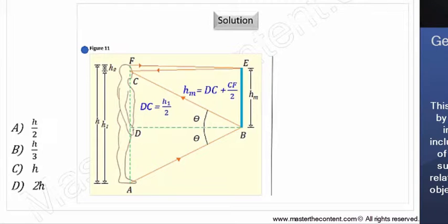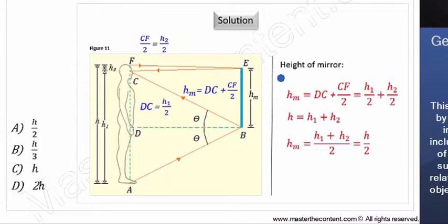Additionally, the height of the top portion of the mirror, that being half the length of CF, is equal to one half of H subscript 2, the height from eye level to top of your head. Now, knowing that bit of info, coming over here to our equation, the total height of the mirror is as follows.